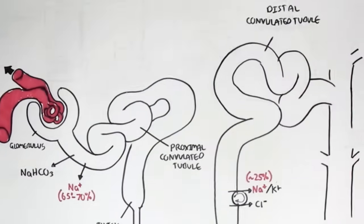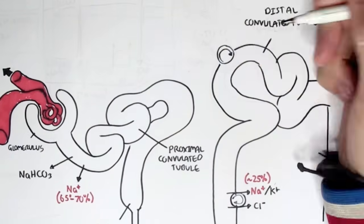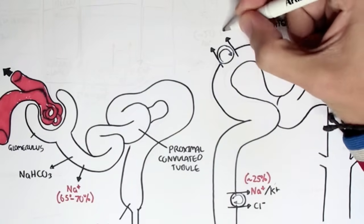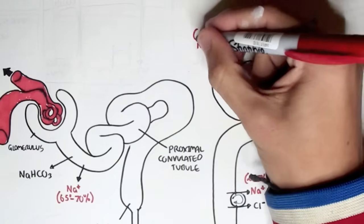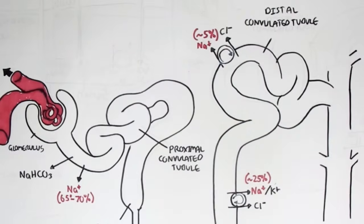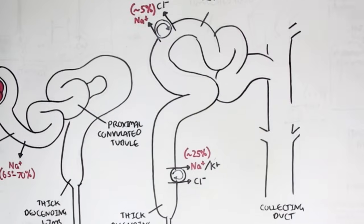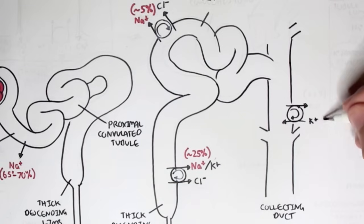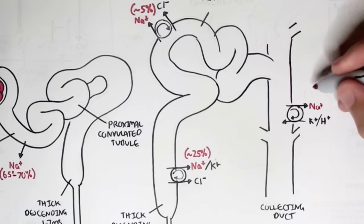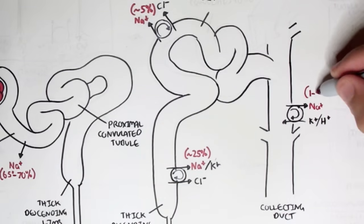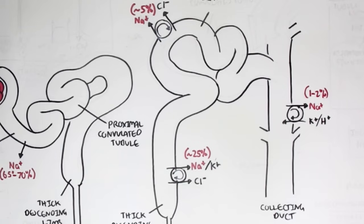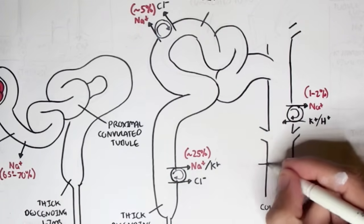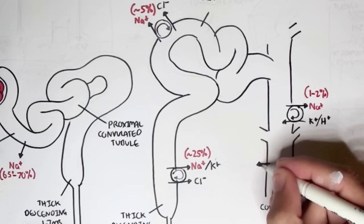In the distal convoluted tubules, another cotransporter reabsorbs sodium and chloride ions — about 5% of sodium is reabsorbed. Finally, in the collecting ducts, there is a transporter which reabsorbs sodium but secretes potassium, reabsorbing only about 1% of sodium. Water can also be reabsorbed within the collecting duct.